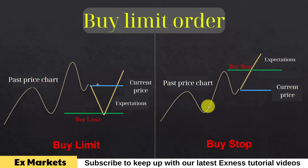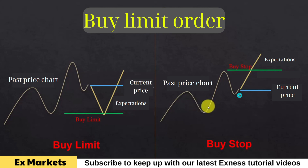For a buy stop order, we also expect the product price to go up, but we believe that going up immediately carries a risk at the current position. At the resistance level above, we are concerned that when the price goes up and touches this resistance level, it may go down again. So we will not place a buy order immediately at the current price. Instead, we will wait for the price to truly go up, and if the price surpasses the resistance level on the left, it will confirm an upward trend. At that point, we will place a buy stop order at the position we marked. So a buy stop order is a buy order at a price higher than the current market price.